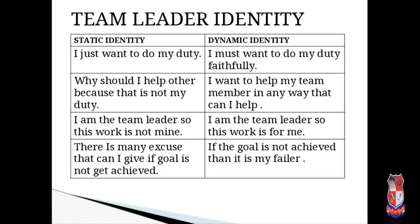In static identity, a team leader thinks 'Why should I help others? That is not my duty.' In dynamic identity, the person thinks 'I want to help my team members in any way that I can.' In static identity, the leader says 'I am the team leader, so this work is not mine.' In dynamic identity, the leader says 'I am the team leader, so this work is for me.' In static identity, the leader makes many excuses if the goal is not achieved. In dynamic identity, the leader thinks 'If the goal is not achieved, then it is my failure because I am the leader of the team,' whereas the static-identity leader does not take responsibility well.